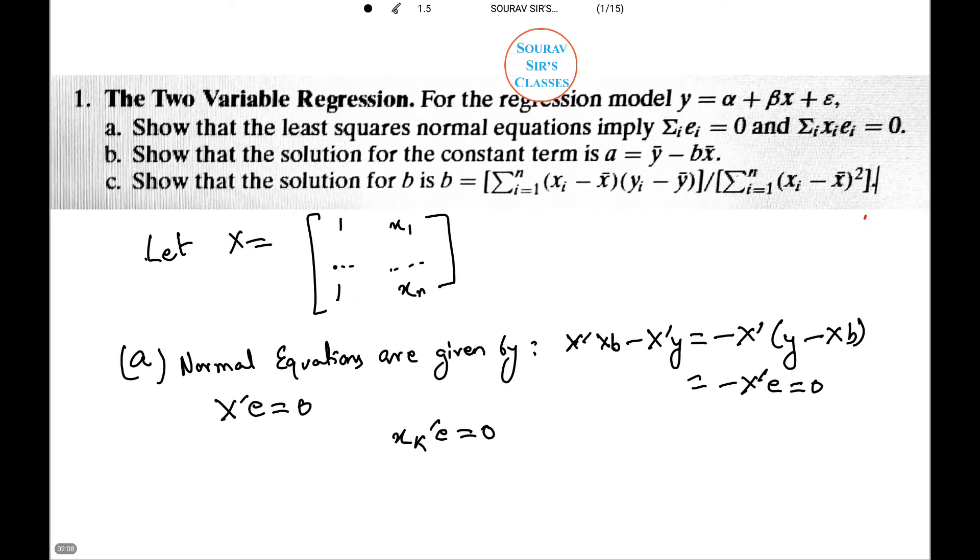This implies summation i equals 1 to n of e_i equals 0, and summation i from 1 to n of x_i e_i equals 0. And hence, the given conditions are proved.